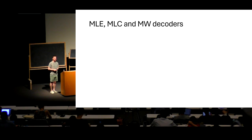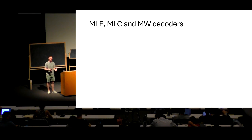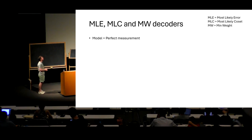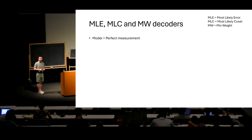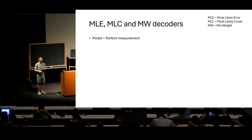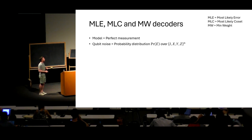Let's look at the decoding problem. I already defined a minimum weight decoder; we can also define other classes of decoders. The model I'm going to assume is perfect measurement — it's the simplest model. You have a Pauli error, you can measure the syndrome, and the circuit measuring the syndrome is perfect. We also have some noise model: a probability distribution over the set of Pauli errors, telling us which Pauli error appears with which probability.